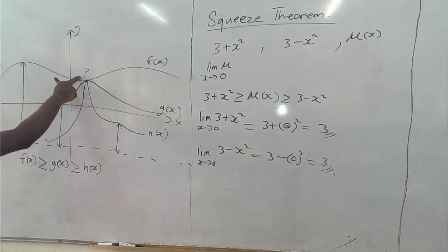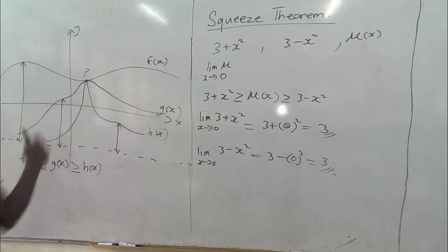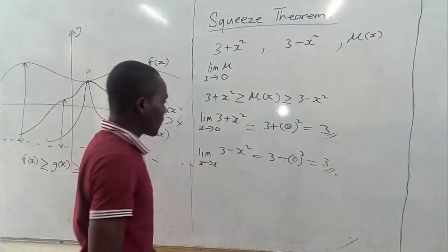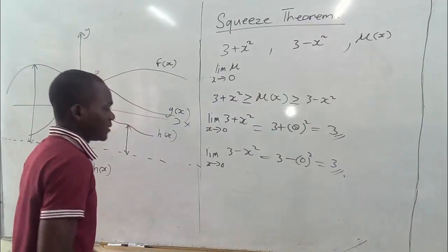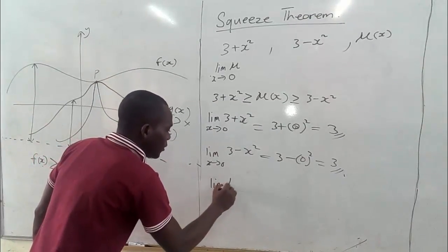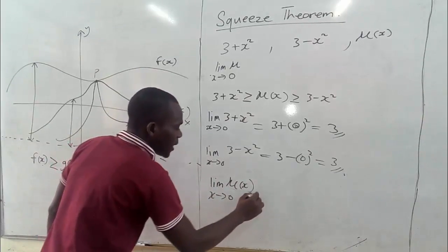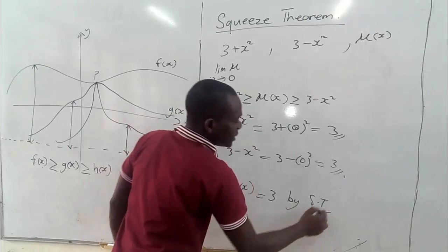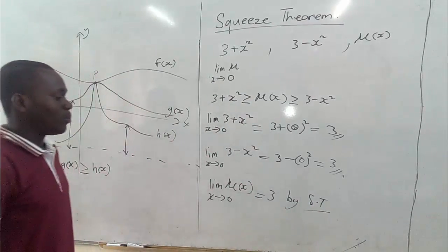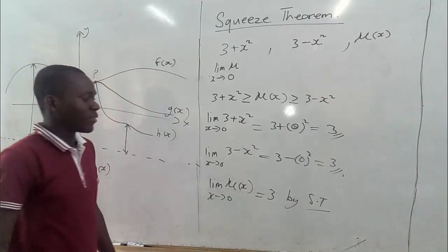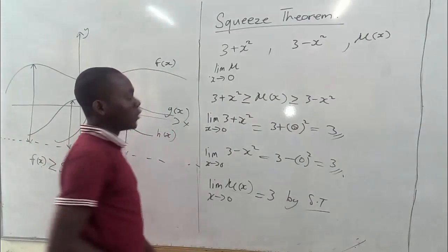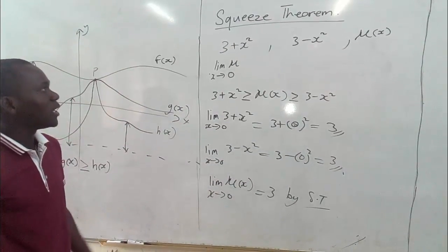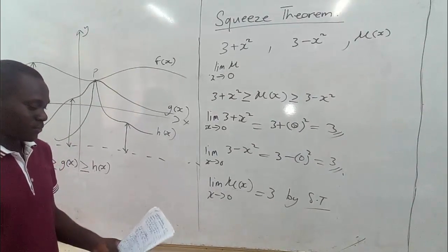We can say the graph of this and the graph of that meet at a certain point, and mu of x would also be at that point. We are squeezing the limit out of these two functions. From the Squeeze Theorem, we can say the limit of mu of x as x approaches zero is equal to three. Per the Squeeze Theorem, the limit of mu of x is also three, since it finds itself in between the two other functions and their limits are equal. That's how we find the limit for mu of x.